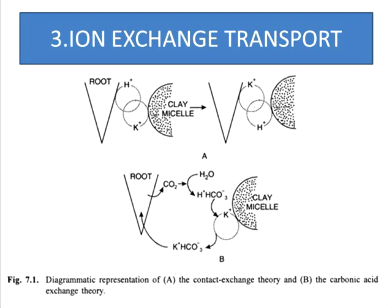The carbonic acid exchange theory depicts that the soil solution plays an important role. As the root cell respires, it releases CO2. This CO2 combines with water and forms carbonic acid, which dissociates into H+ ions and bicarbonate ions (HCO3−). The K+ adsorbed to the clay micelle combines with bicarbonate to form potassium bicarbonate, which is soluble in the soil solution and then absorbed by the root. This is how the two theories explain the ion exchange transport mechanism.